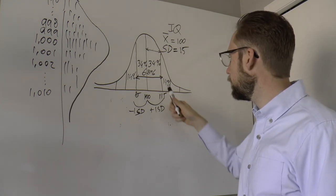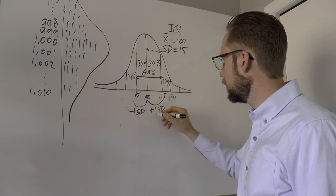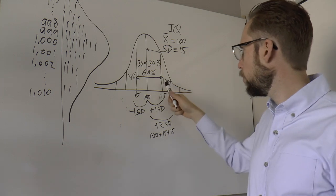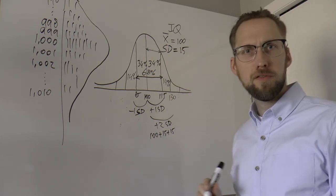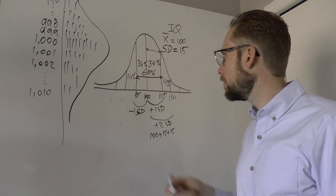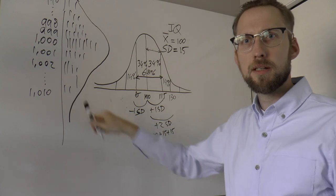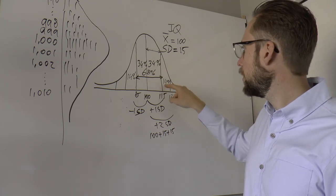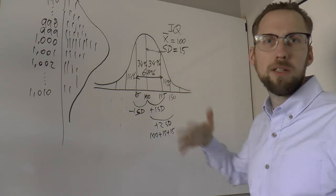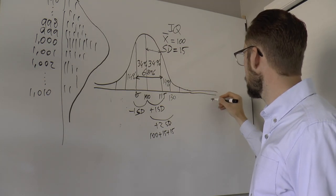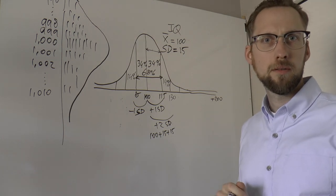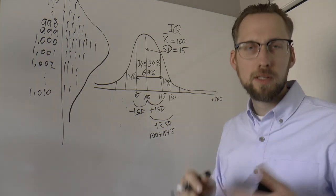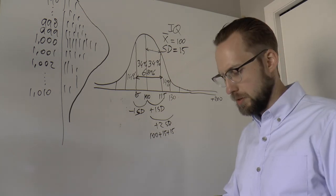So 68% of all IQs in the world fall between 85 and 115. And 14% of people have an IQ between 115 and 130. As the tails get thinner, there are fewer and fewer observations — very few people will have an IQ of 200, because that's three or more standard deviations above the mean. The percent keeps dropping as you go further out.